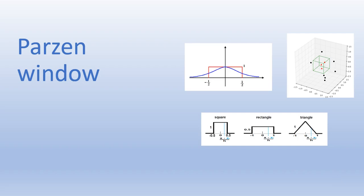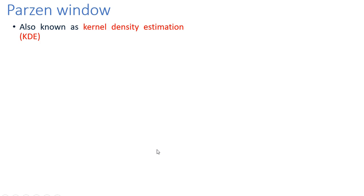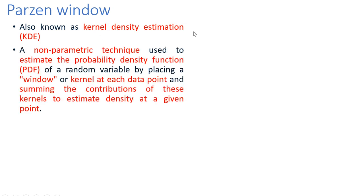Hello everyone and welcome to the session. In this video we will discuss about Parzen Window. Parzen Window is also commonly called as Kernel Density Estimation. It's a non-parametric technique which is used to estimate the probability density function for a random variable by placing a window, also called as kernel, at each data point and then you sum up the contributions of all these kernels to estimate the density at a given point.